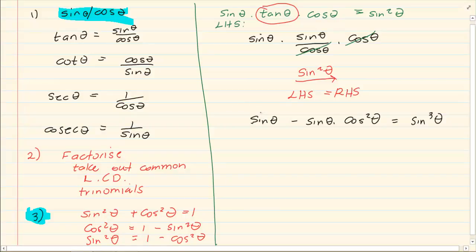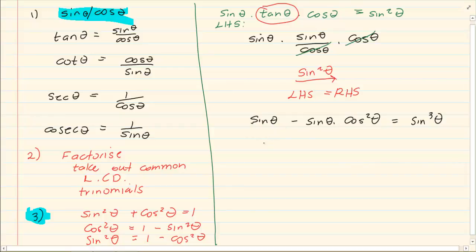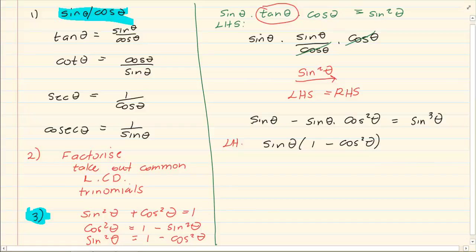Looking at the next example, you will notice everything is already in sin and cos, so step one is done. We can't change anything further, so we factorize. We can take out sin theta as a common factor, giving us sin theta times the quantity 1 minus cos squared theta. Remember we are working with the left hand side — the norm is usually to work with the left hand side, and it is very rare to work with the right hand side.